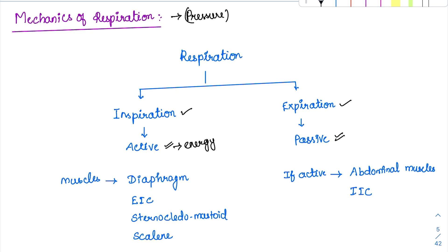The muscles involved in inspiration are the diaphragm and external intercostal muscles. Inspiration is caused by external intercostal muscles — not internal intercostal, that is wrong. Also involved are the sternocleidomastoid and scalene group of muscles. Expiration is usually passive, but if it becomes active — for example, during fast breathing — it takes help of the abdominal muscles and internal intercostal muscles.